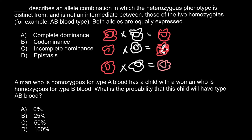Returning to our problem: we are told that the heterozygous phenotype should not be intermediate. That means the correct answer is the one where both alleles are expressed as distinct pure colors — red and white patches — which is co-dominance. The answer is B.